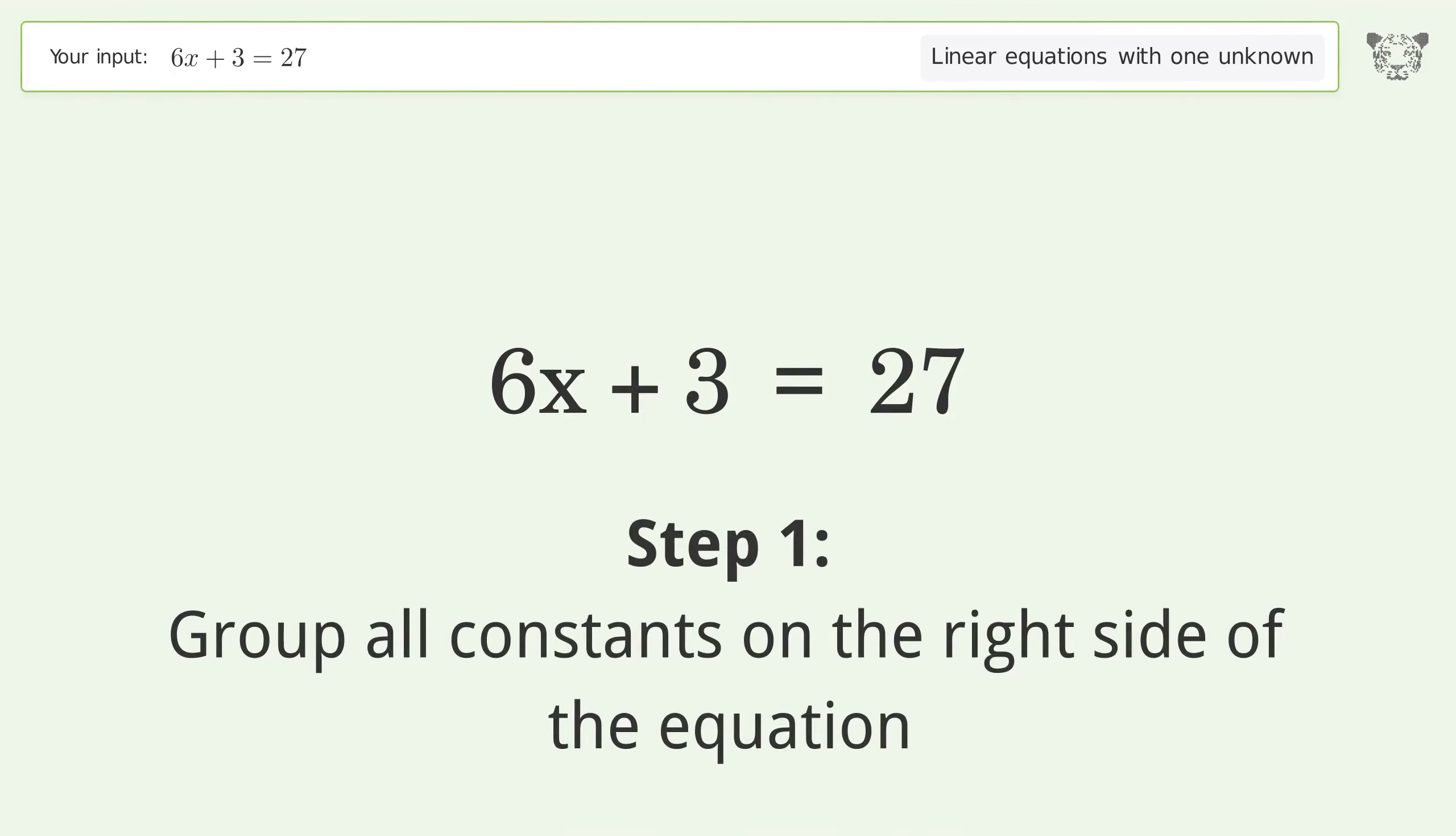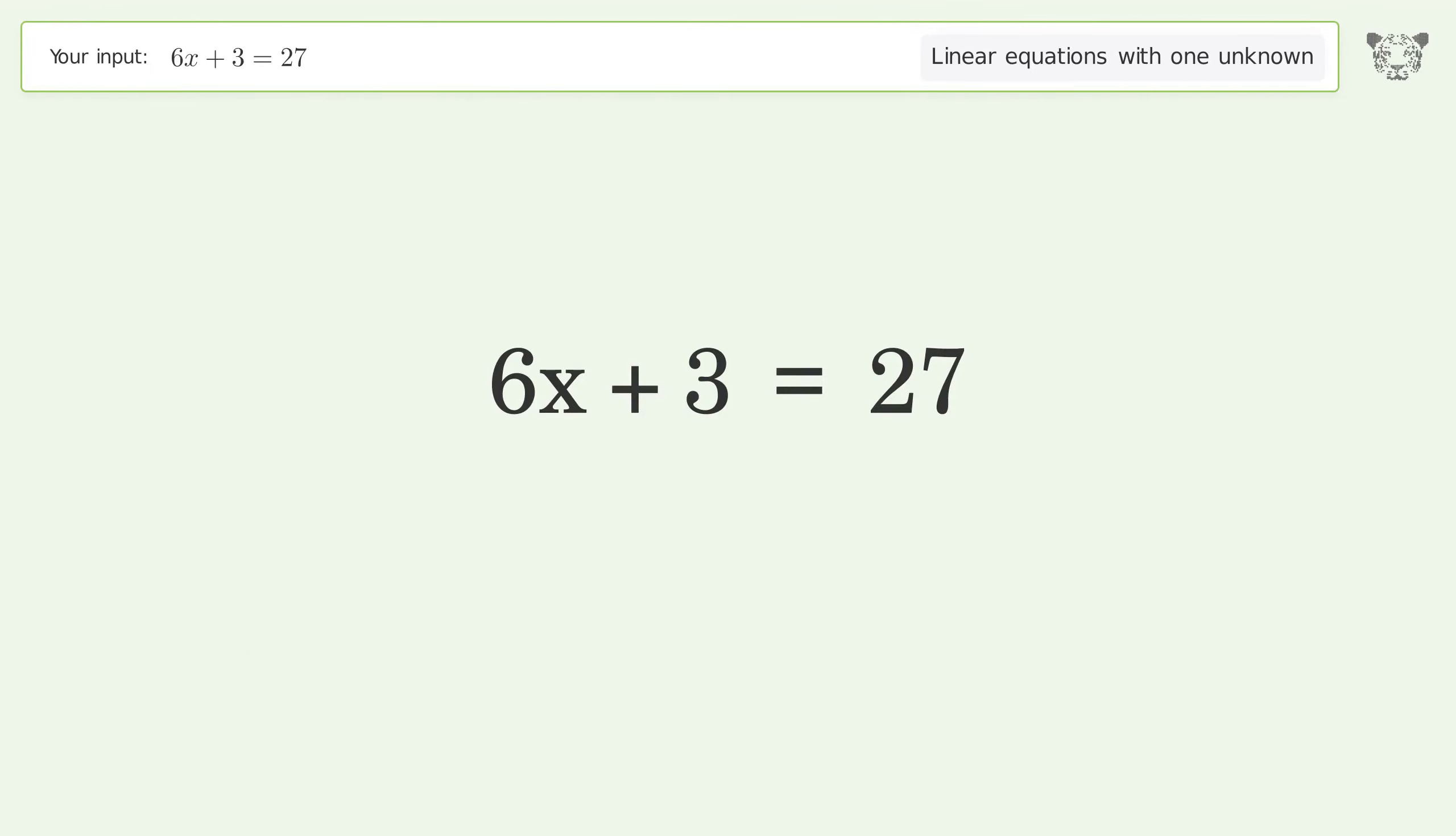Group all constants on the right side of the equation. Subtract 3 from both sides. Simplify the arithmetic.